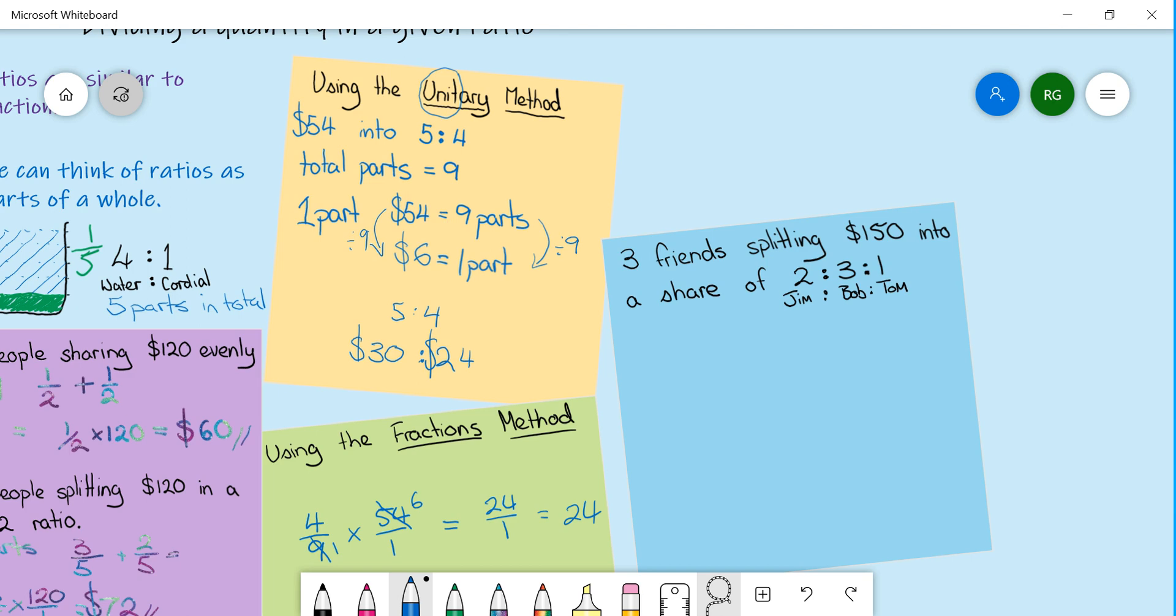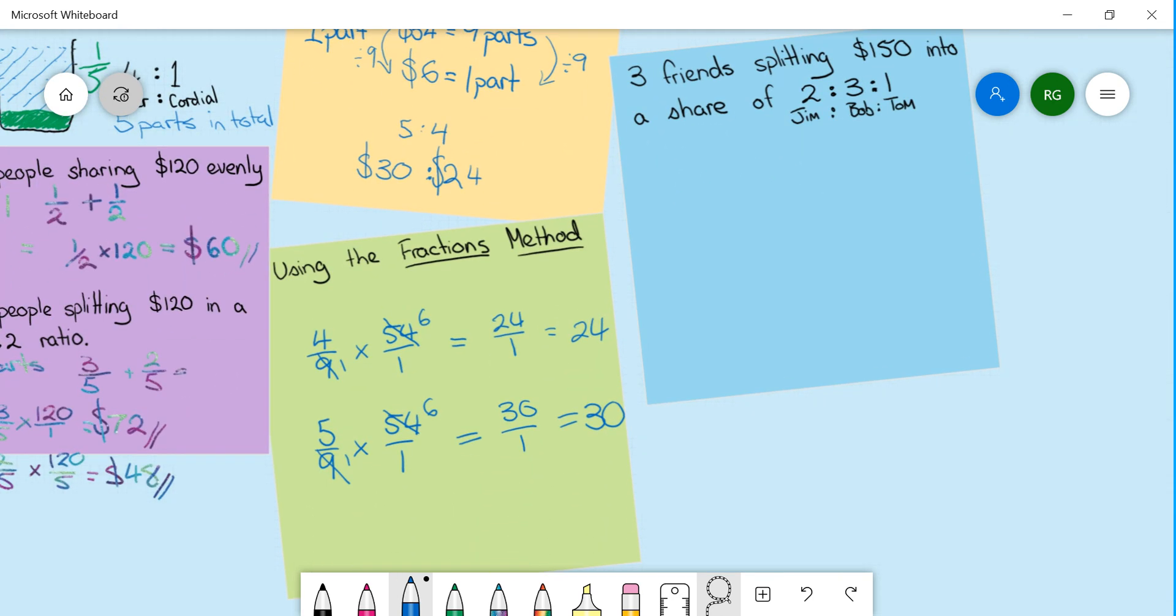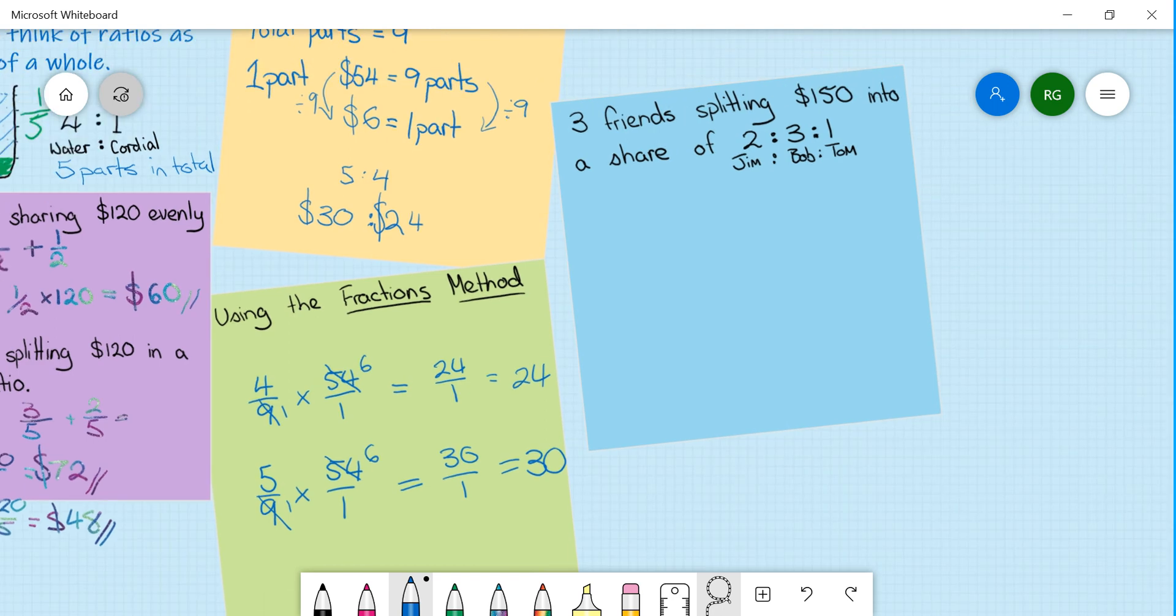And that's another way of solving the same problem. So in the yellow we turned it into finding out what one part is. In the green we just did it simply as a fraction and multiply that fraction of the person's worth by their total amount.